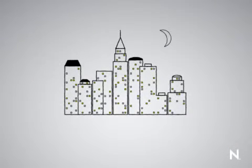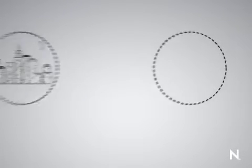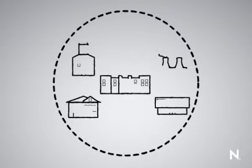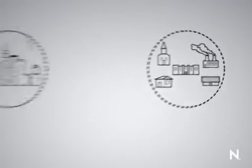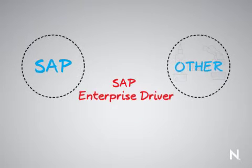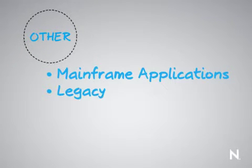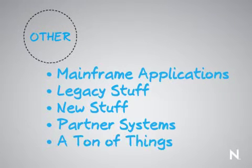SAP is really good at managing SAP access for SAP. But what about taking that now out and fitting it into the larger enterprise — the things that are not controlled by SAP? That's where the SAP Enterprise driver comes into play. It allows a customer who has SAP and also has all the other things — which is typically much more than what SAP has: mainframe applications, legacy stuff, new stuff they're bolting on, partner systems, just a ton of different things.